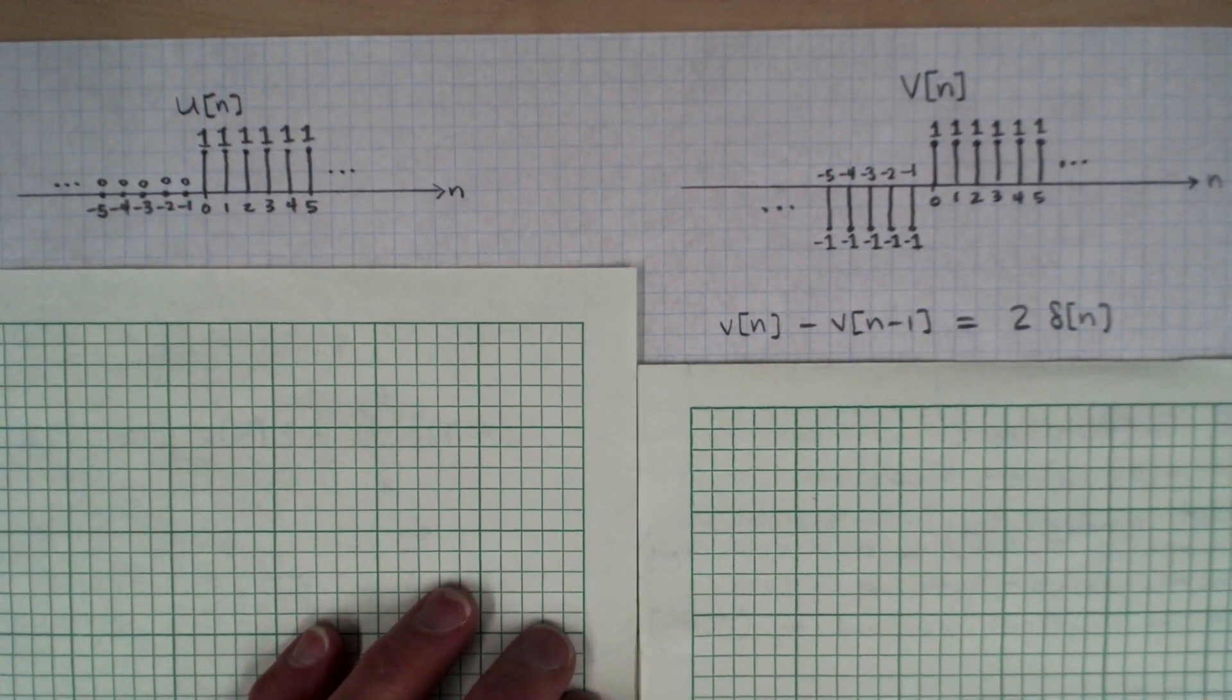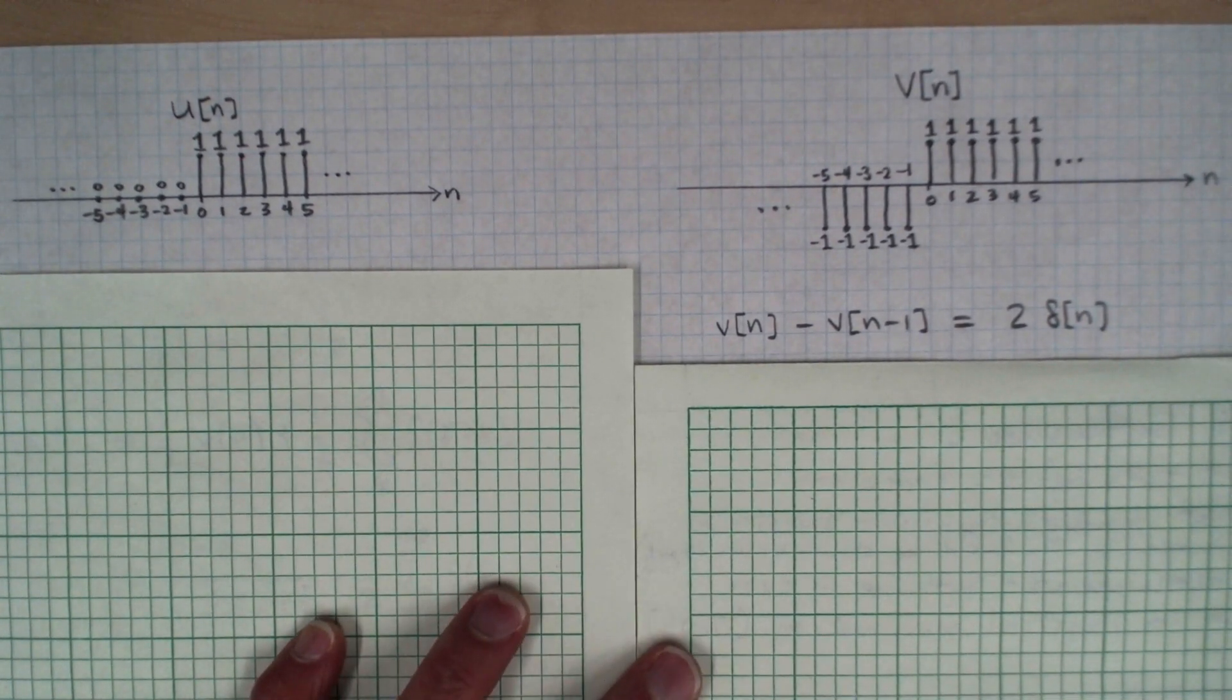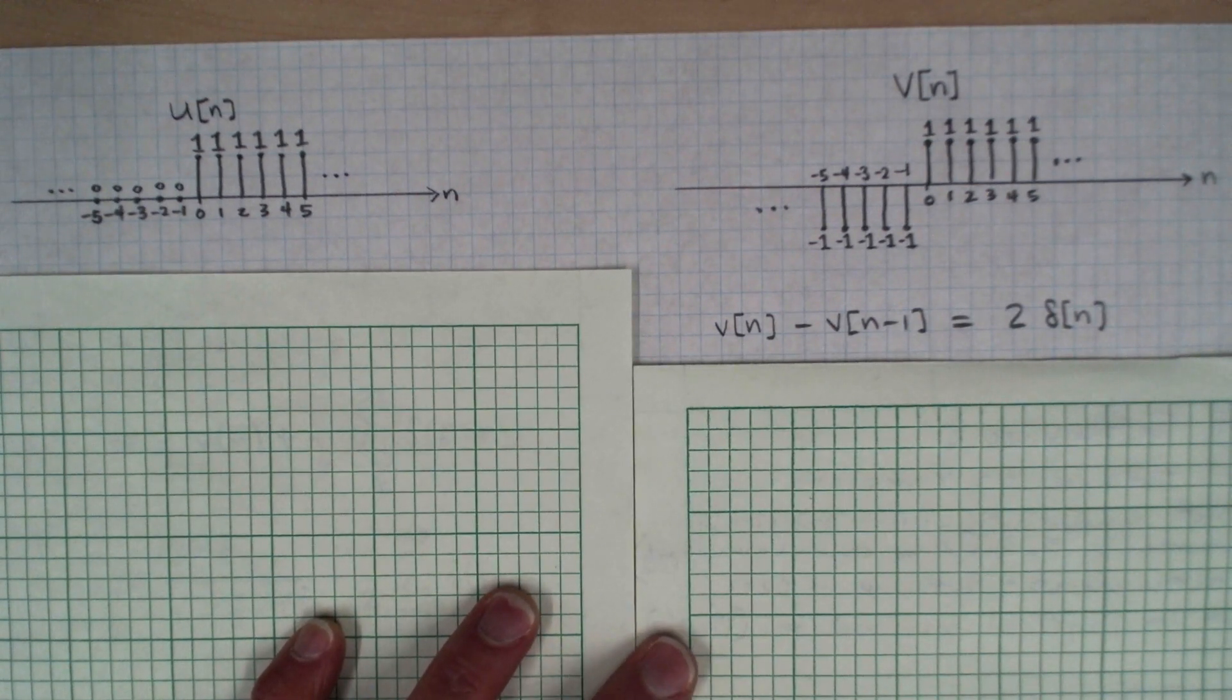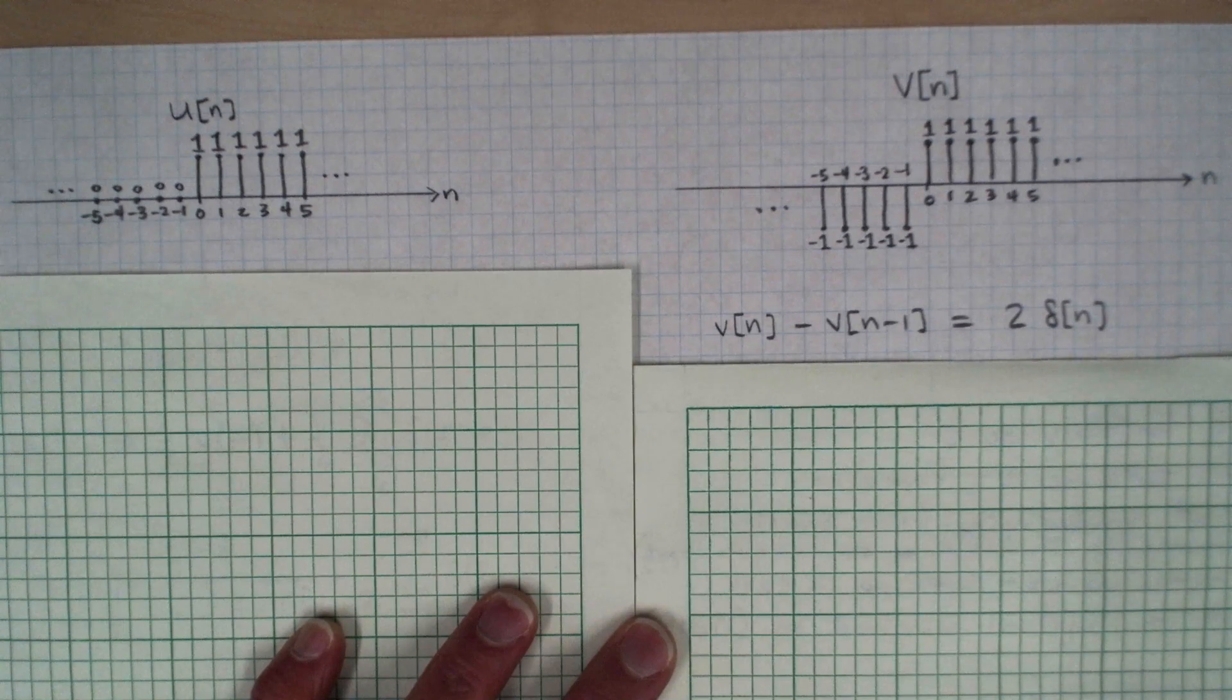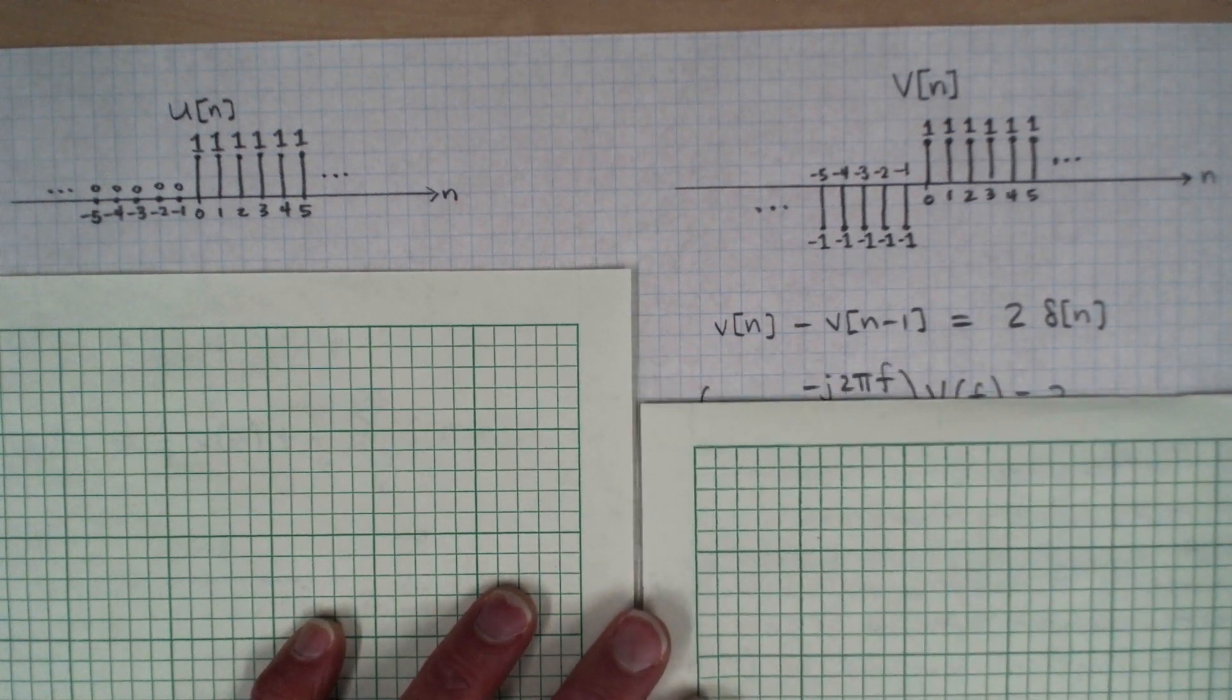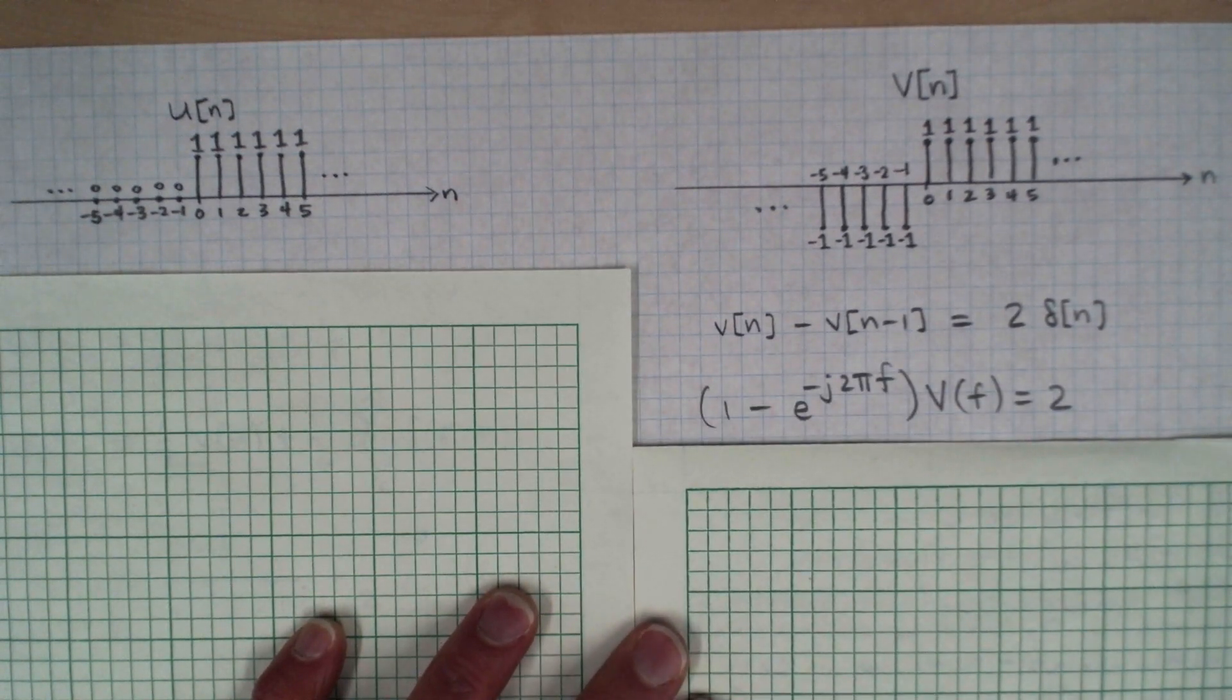So the way that we're going to go about, we're going to first calculate the Fourier transform of this V sequence by taking the Fourier transform of both sides of this relation.